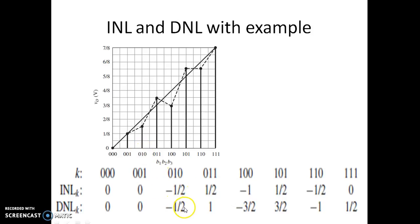The DNL analysis will continue in the next video. Looking at input 0 1 1, the expected output is the ideal value but the actual output is half LSB more, giving INL = +half LSB. At input 1 0 0, the actual output is 1 LSB below the expected value, so INL = minus 1 LSB. The INL values keep changing for each input code as the actual outputs deviate from the ideal straight line.